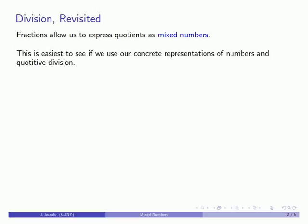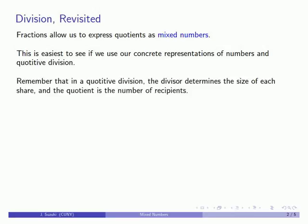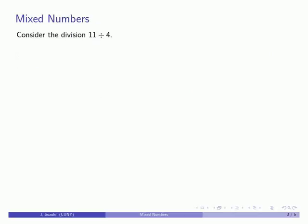And this is easiest to see if we use our concrete representations of number and our concept of division as a quotative division. So, remember that when we're dealing with a quotative division, the divisor tells us the size of each share, how big the piece of cake is, and the quotient is going to be the number of recipients.